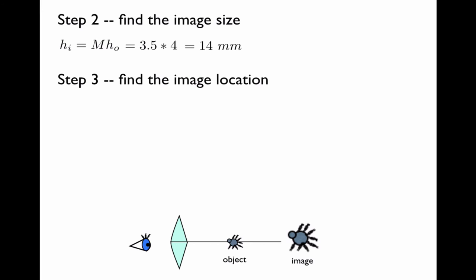Now let's find the image location. We do this using this formula, which we rearranged on the previous slide to solve for the distance to the object. We take the reciprocal of both sides. We plug in the focal length and the value of N, which is 25, and find that the distance to the object is 7.14 centimeters.